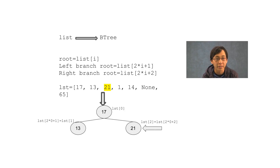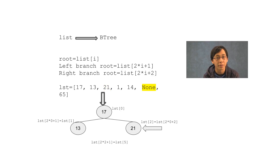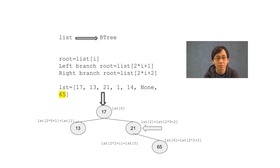And then the left branch of this subtree — the root is going to be the 2 times 2 plus 1 element of the list, None. And the root of the right branch is going to be the 2 times 2 plus 2 element of the list, 65.